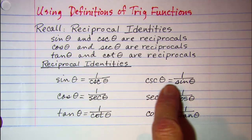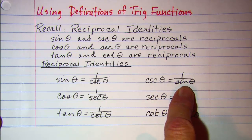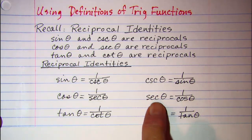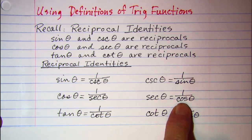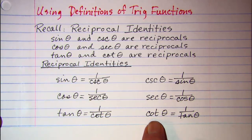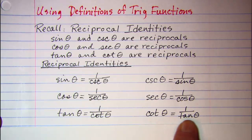Cosecant is equal to 1 over sine theta. Secant theta is equal to 1 over cosine theta. And cotangent theta is equal to 1 over tangent theta.